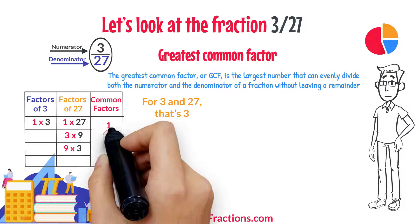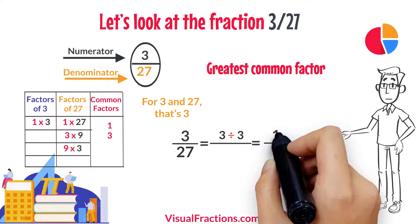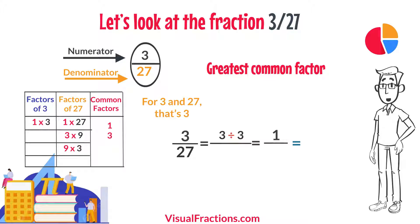For 3 and 27, that's 3. We start by dividing 3 by 3, which gives us 1. Then we divide 27 by 3, which results in 9.